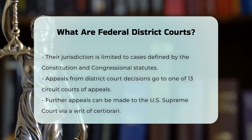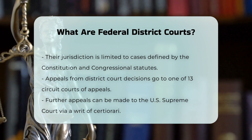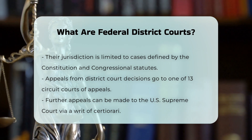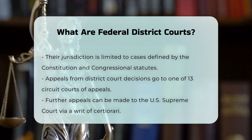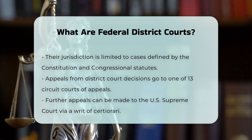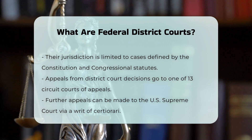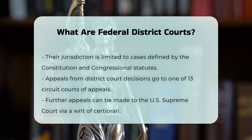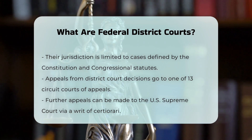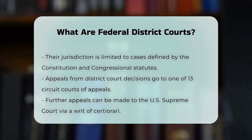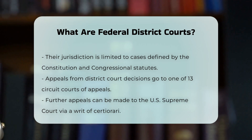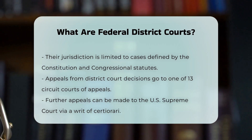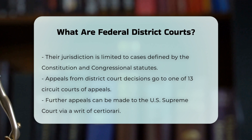Appeals from district court decisions are made to one of the 13 Circuit Courts of Appeals, each serving a separate geographic area. From there, cases can be further appealed to the U.S. Supreme Court through a writ of certiorari.